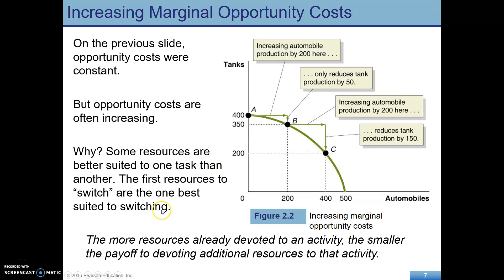Why might this be the case? Some resources are better suited to producing tanks than automobiles. The first resources we give up are probably better suited to making automobiles anyway. But by the time we get to moving from B to C, we are giving up resources that are better suited to producing tanks and forcing them to make automobiles instead. This is the general principle: increasing marginal opportunity costs — the more resources already devoted to an activity, the smaller the payoff to devoting additional resources to that activity.